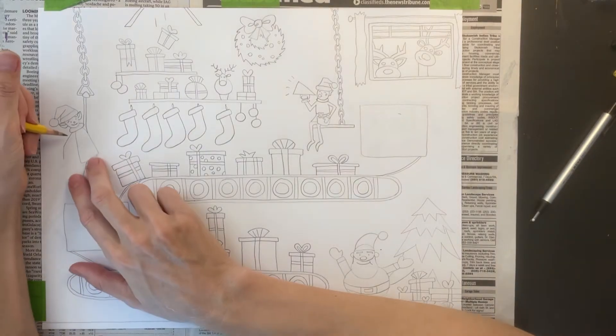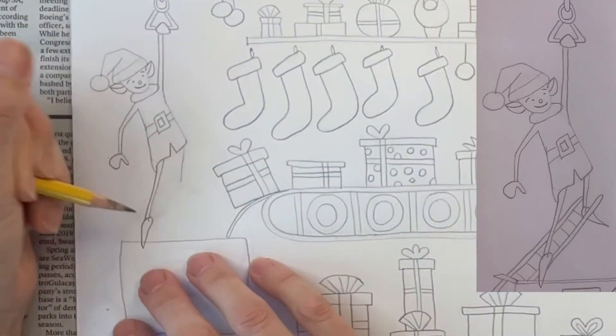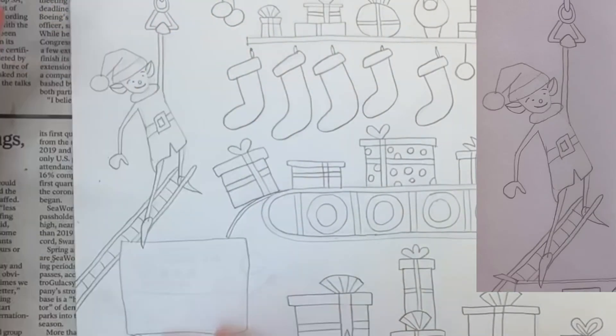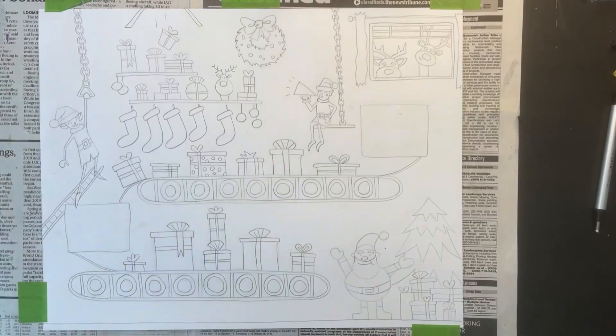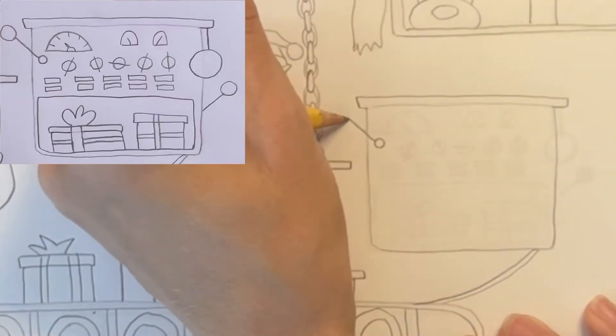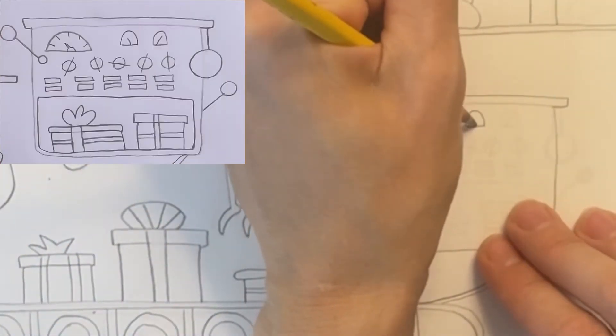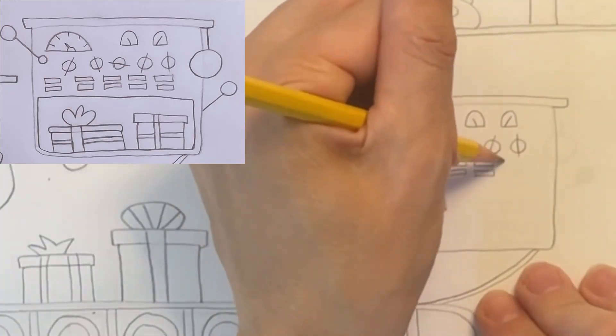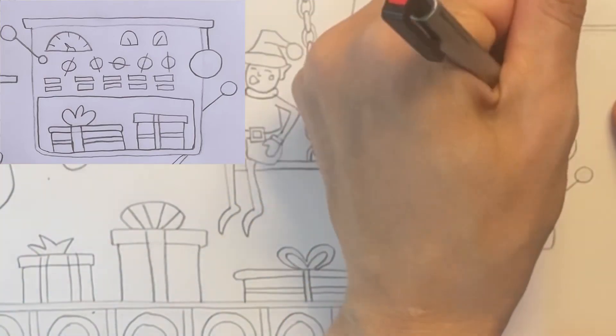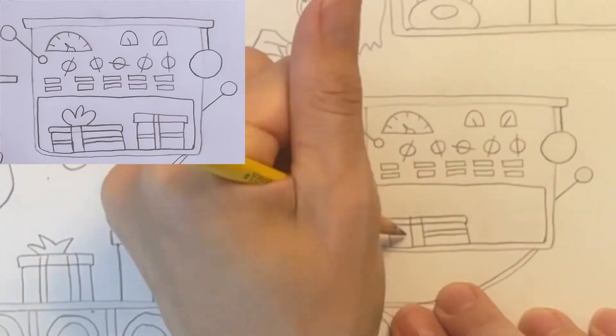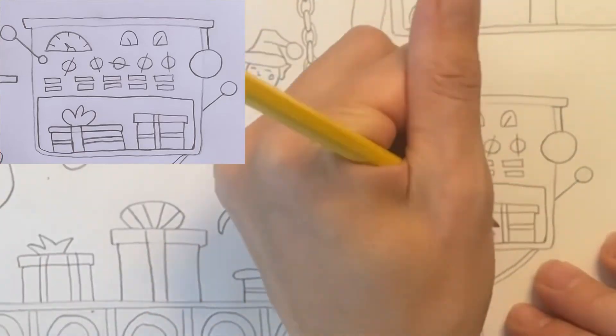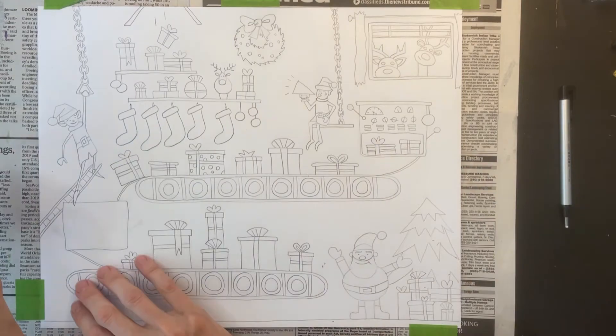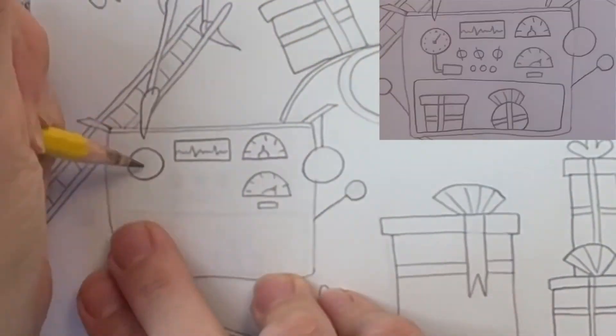Now I'm going to finish adding the details to this elf and draw a ladder underneath him. It's time to add some levers, knobs, and buttons to the machine that processes the presents onto the conveyor belt. You can really have fun and use your imagination when you do this. This is the opening where the presents come out. I'm adding similar details to the other machine.